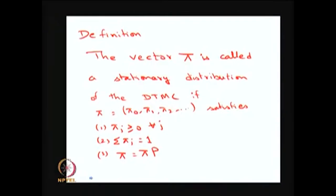Now I am going to move to the stationary distribution, which is also a very important concept in the Markov chain. I am going to give the definition of a stationary distribution. The vector pi is called a stationary distribution of a time-homogeneous discrete-time Markov chain if that vector satisfies: first, all pi_j values are greater than or equal to 0 for all j; second, the summation of pi_j is equal to 1; and third, pi equals pi times P, where P is the one-step transition probability matrix.